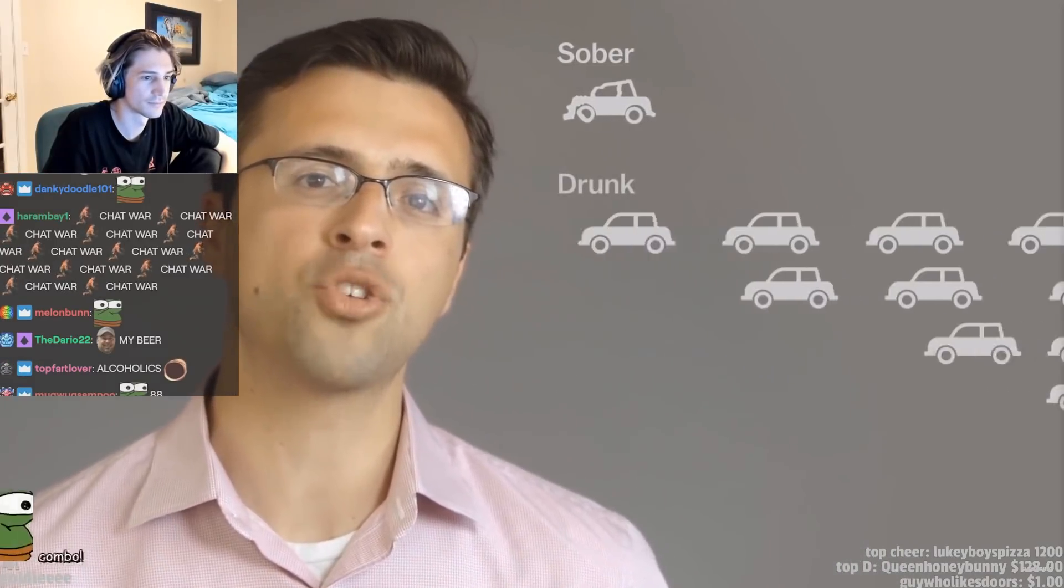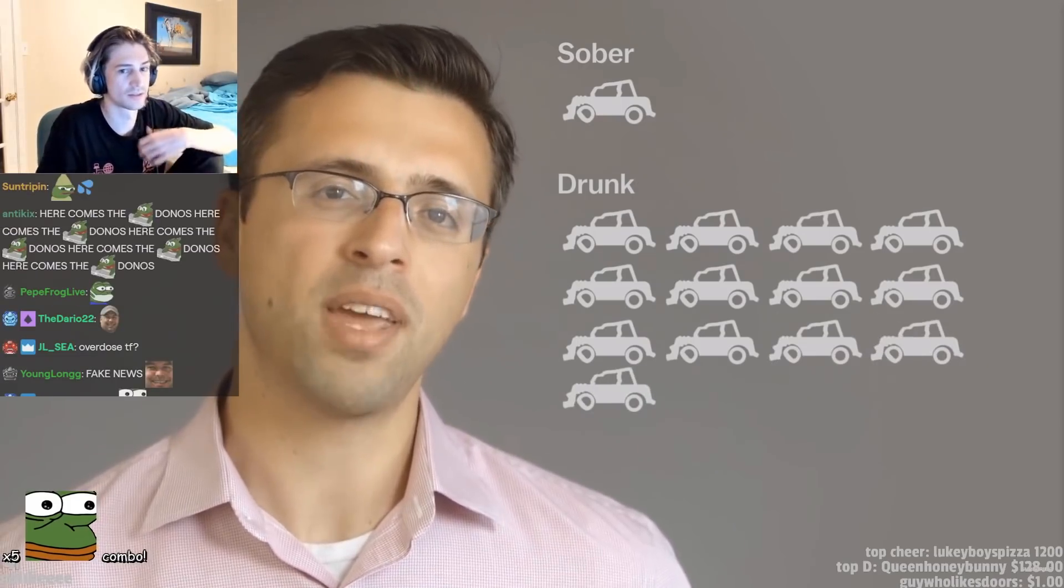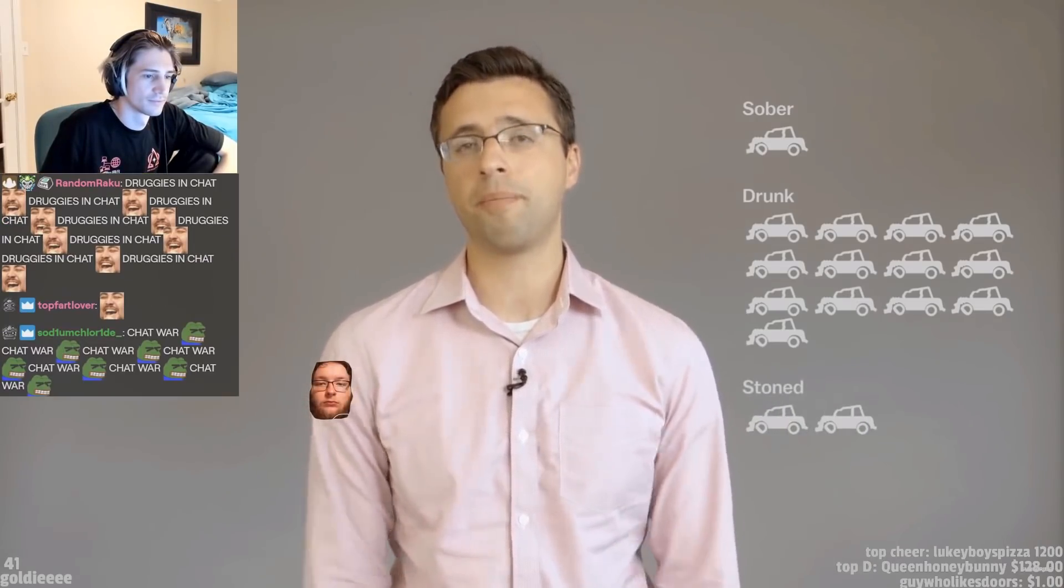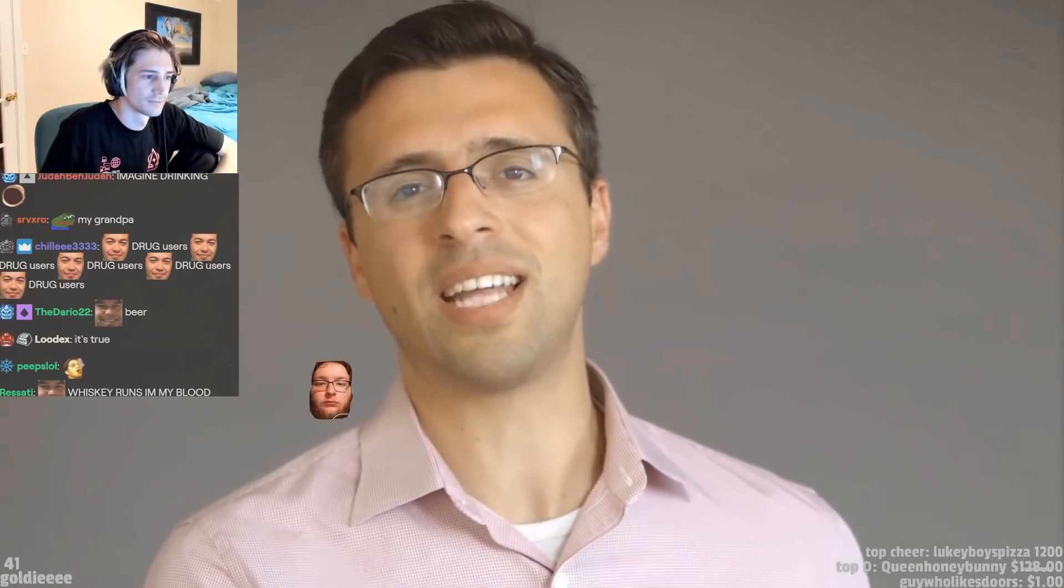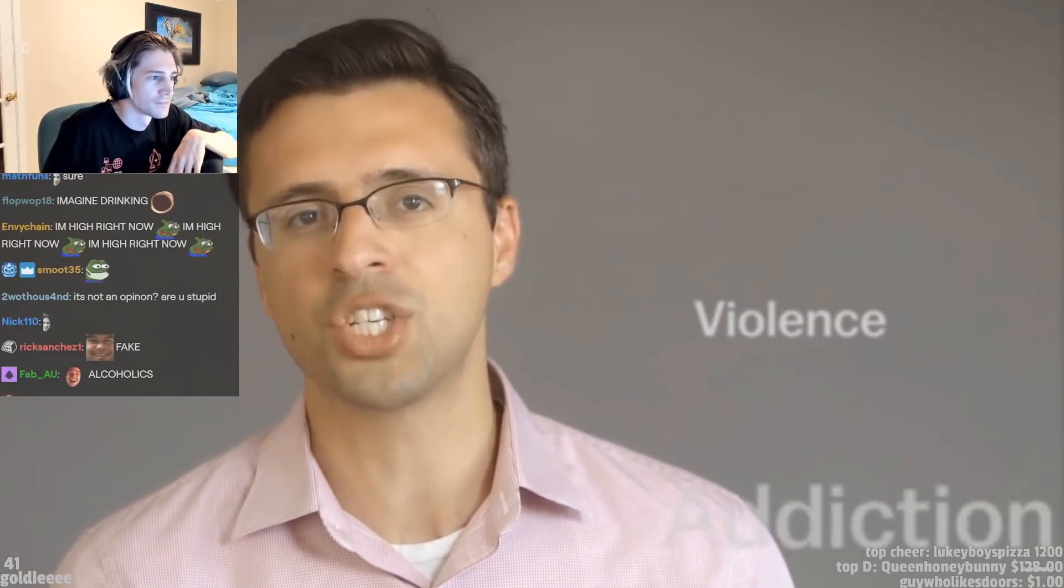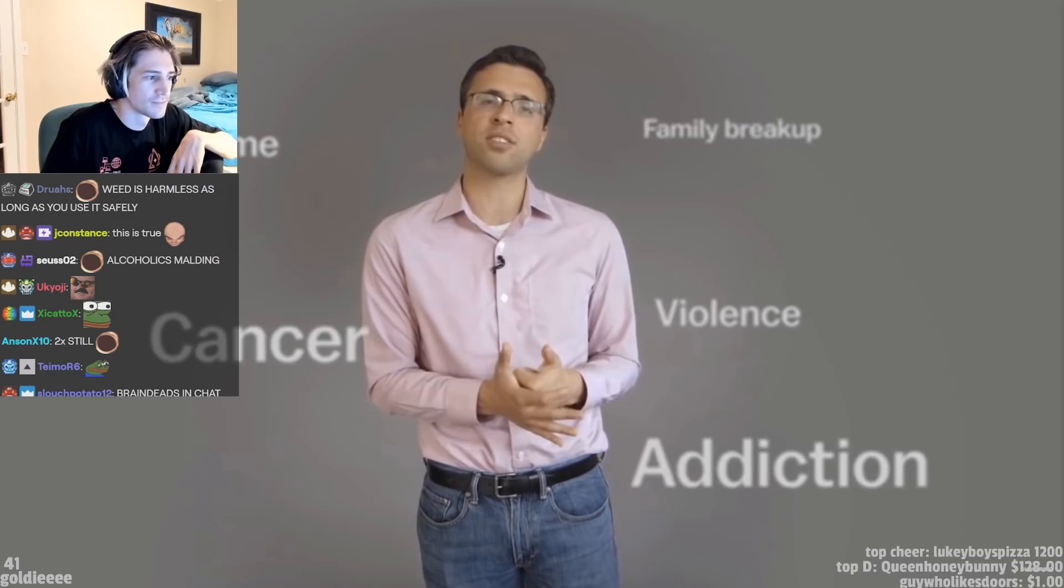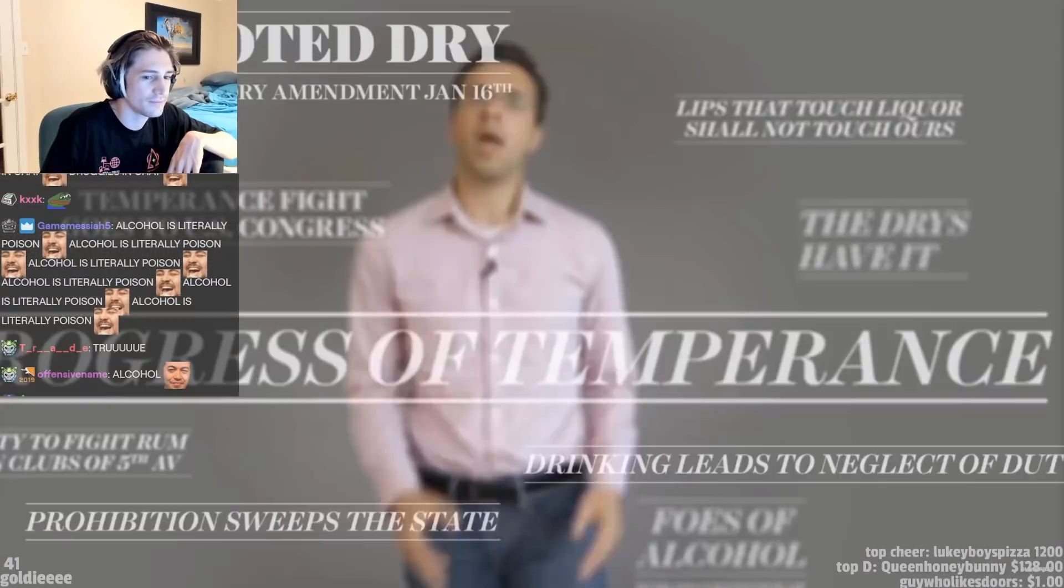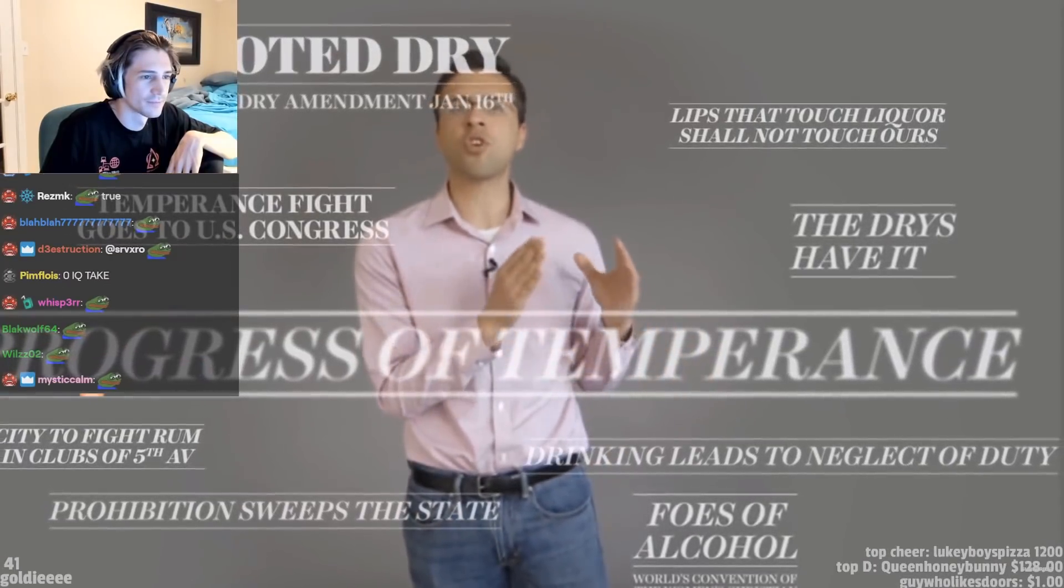A Columbia University study found that being drunk increases the risk of a fatal accident 13-fold. Pot, by contrast, increases risk less than two-fold. Then there's all the other nasty stuff alcohol leads to. It's a big contributor to violence, to crime, to addiction. It breaks up families, it gives people cancer, it gives them liver failure. People forget this, but prohibition, we laugh at it now, but it was happening for a reason. People drank more then and it was a scourge.